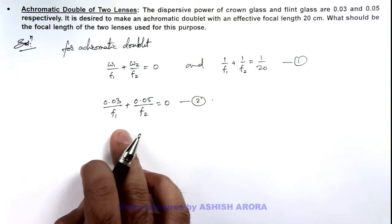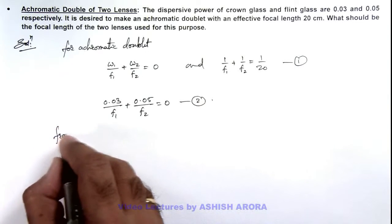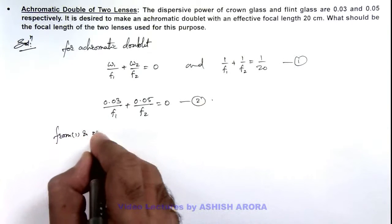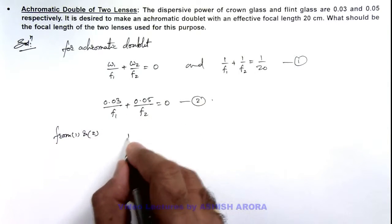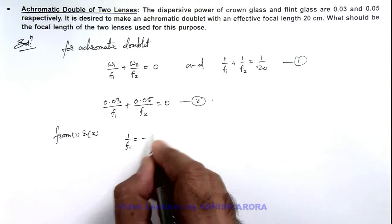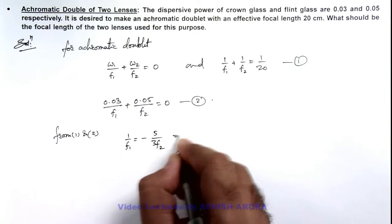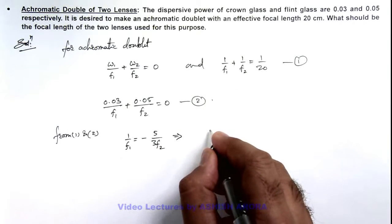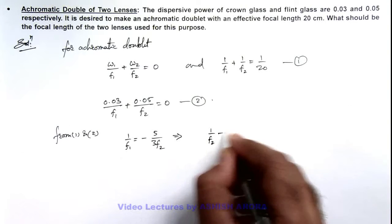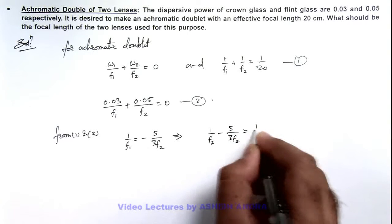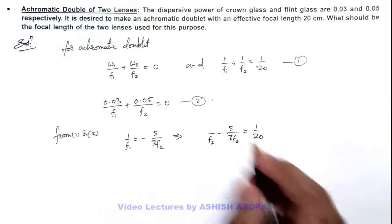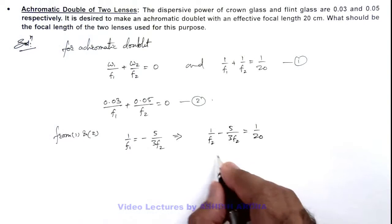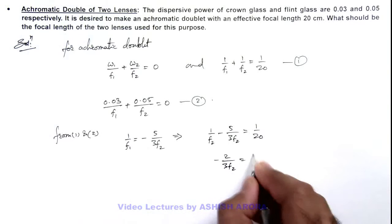From here, we can solve from equations 1 and 2. This gives us the value 1 by f 1 is equal to minus 5 by 3 f 2. This implies if we substitute the value over here, this is 1 by f 2 minus 5 by 3 f 2 is equal to 1 by 20. So further on simplifying, we are getting minus 2 by 3 f 2 is equal to 1 by 20.